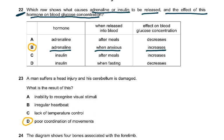Insulin is produced after a meal but then decreases the blood glucose. Insulin is not produced when fasting — it is produced only when you've eaten something made of carbohydrate, which increases the blood glucose levels.